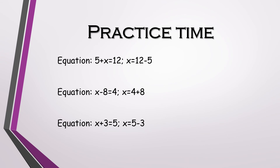Let's practice some equations. Our first equation is 5 plus x equals to 12. We are going to use subtraction as our inverse operation, so we subtract 5 from both sides. On the left, 5 minus 5 and x leaves us with x. On the right, 12 minus 5 equals to 7. This gives us the answer x equals to 7.